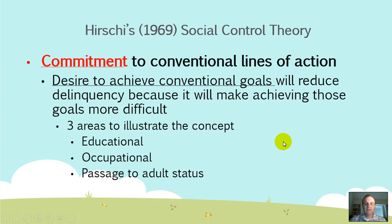There are three areas illustrating commitment. Education: most youth are worried about what college they'll get into, wanting a good GPA to get into law school, a doctoral program, or an MBA program. So you're not going to be out there selling cocaine if you want to get into law school, because that will hinder the ability to do so.